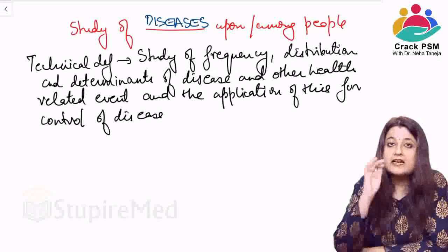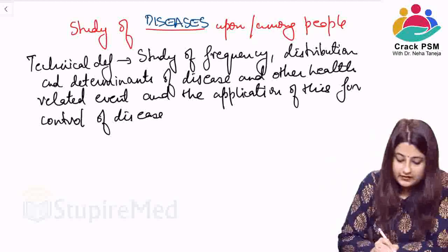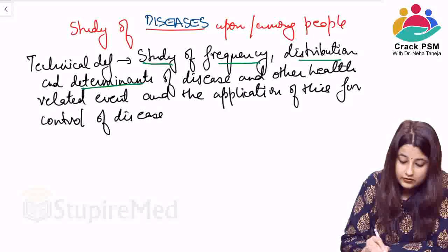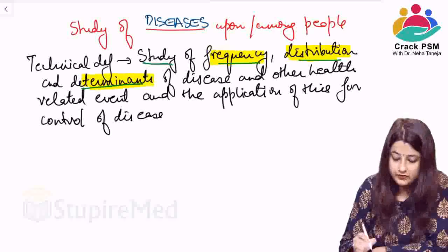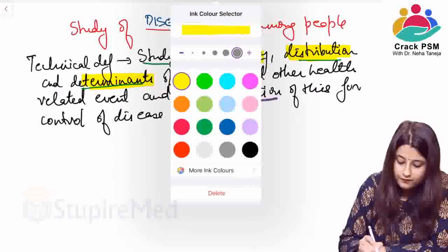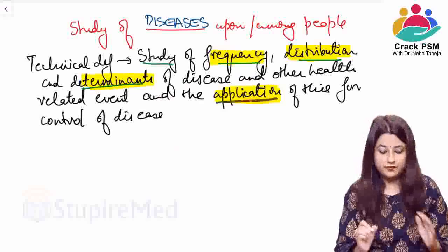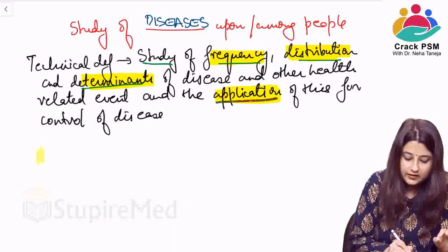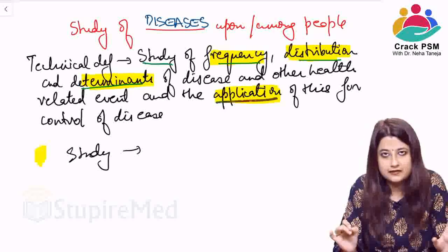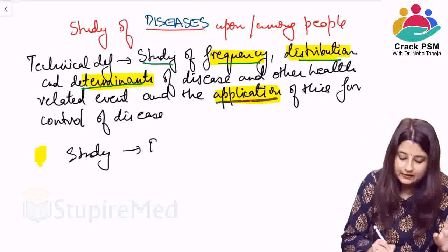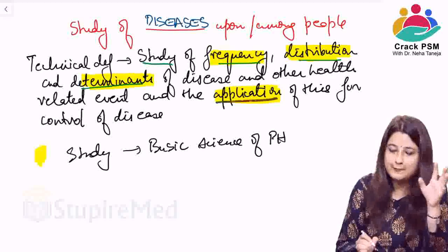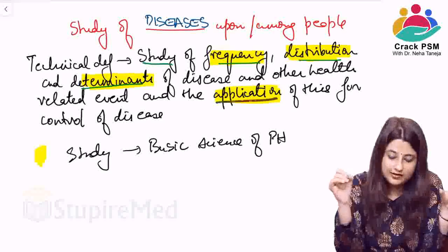Let us look at the definition again — it has a few important parts. The first is that it is a study, which is simply the basic science of public health. Epidemiology is the bible of public health. The study includes all quantitative as well as qualitative study designs. The next part is the study of frequency, distribution, and determinants, followed by the application of this for the control of diseases.